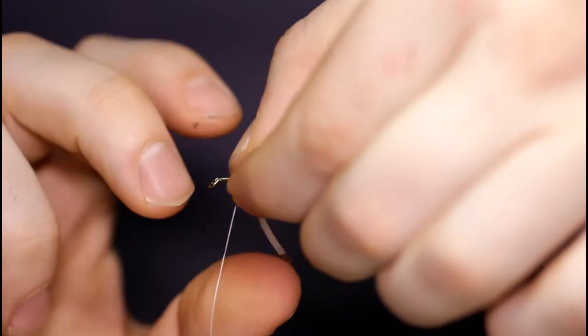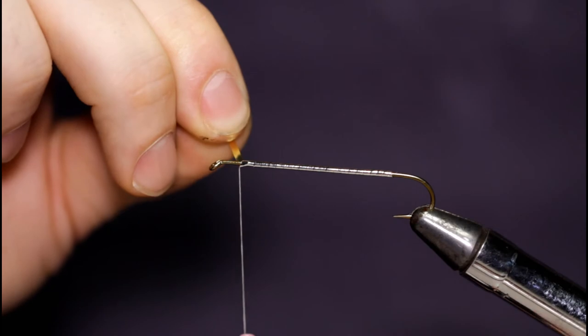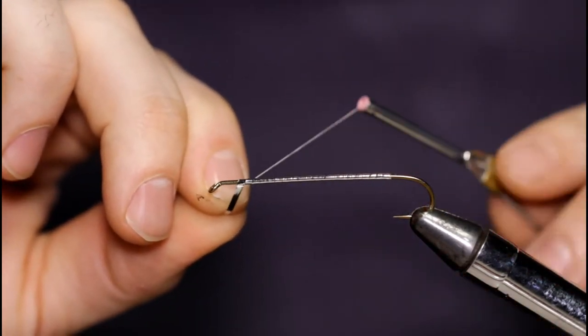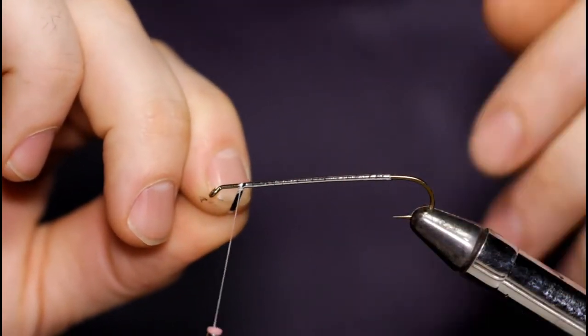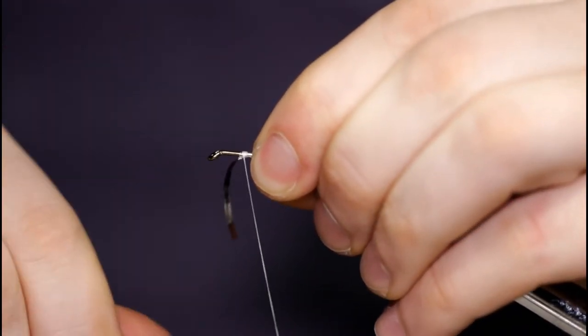I'm just going to grab my bobbin and bind down that tinsel with a couple of tight turns. Be careful not to let up on your thread tension here or you'll lose the whole wrap job you just did. I'll snip off that extra piece.